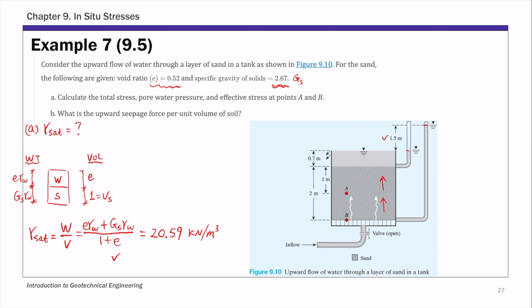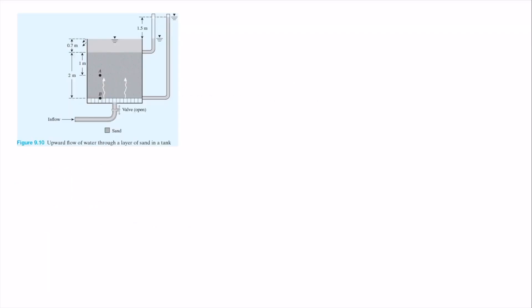Now let's look at the total stress, pore pressure, and effective stress calculations at points A and B on a new slide. At point A, which is located one meter below the top of the soil layer, the total stress accounts for everything on top — the water and the saturated soil. Total stress sigma_A equals 0.7 meters of water times gamma water, plus 1 meter of saturated soil times gamma saturated.